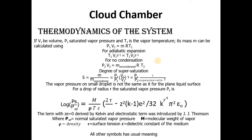Thermodynamics of a system: If V1 be volume, P1 saturated vapor pressure, and T1 is the vapor temperature, its mass can be calculated using ideal gas equation PV equals MRT. For adiabatic expansion, the relation is given. For no condensation and for degree of supersaturation.